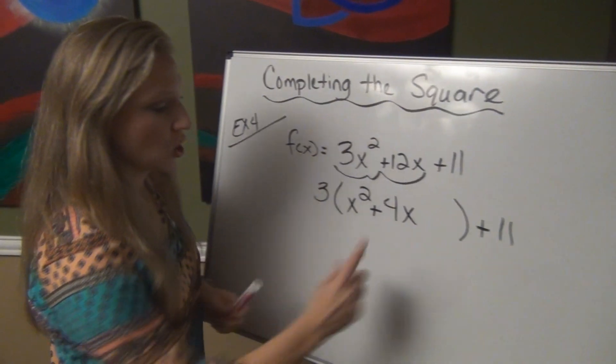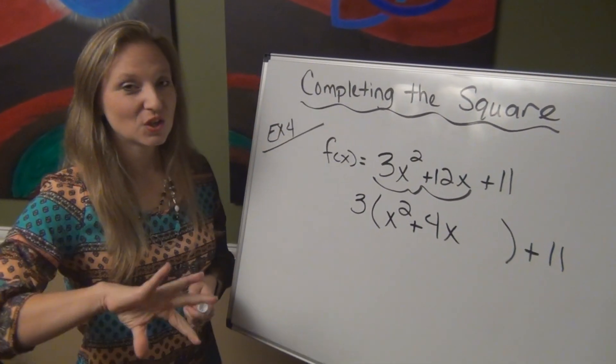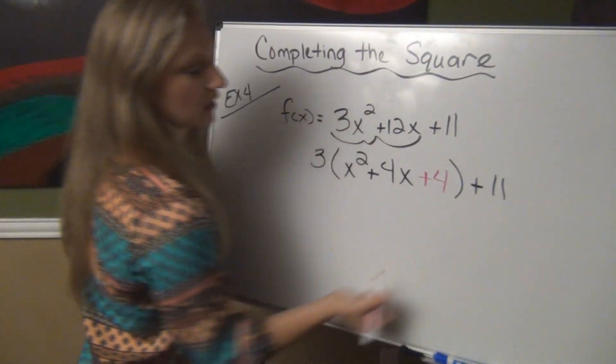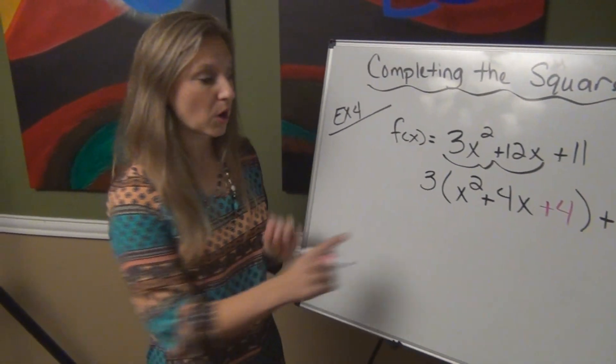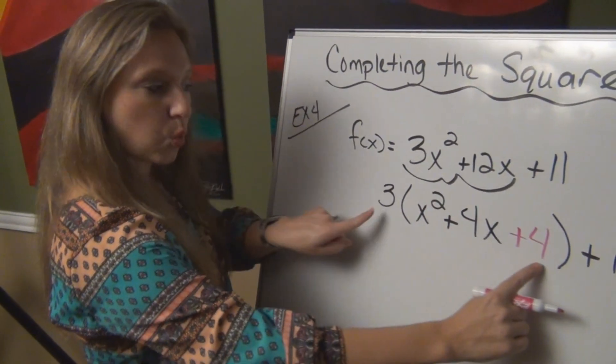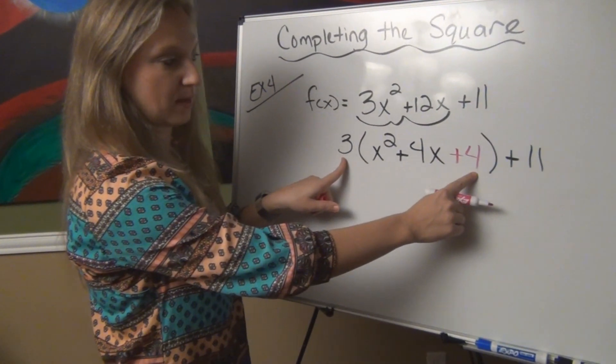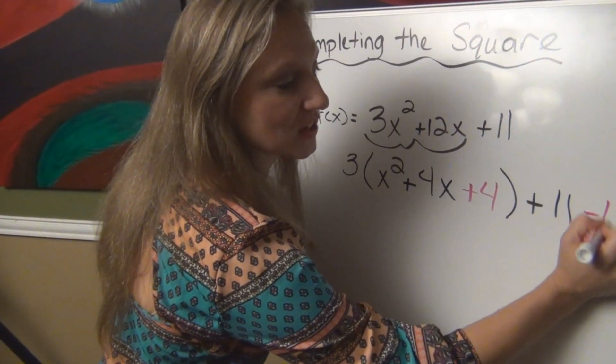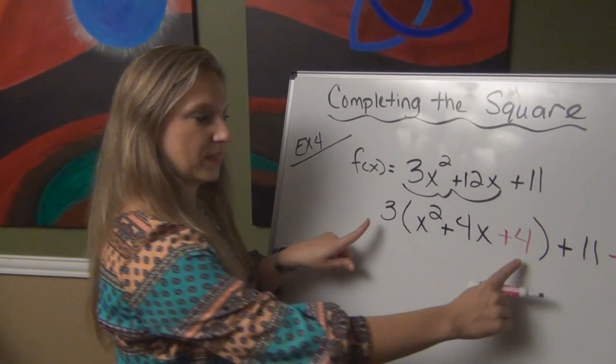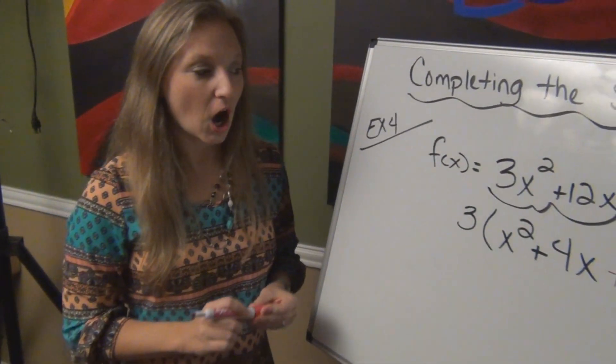So now I'm to the part where I'm going to take the number in front of the x and I'm going to half it, 2 squared is 4. So I'm going to add 4 here. Now remember, this is the part that's different. Since I have this 3 out here, I'm really adding 12 because 3 times 4 is 12. So I really added 12 to my equation this time. So if I add 12, I have to subtract 12 to keep my equation balanced. So be careful about thinking about what am I adding. I got to subtract it also to keep it balanced.